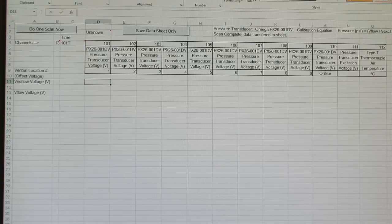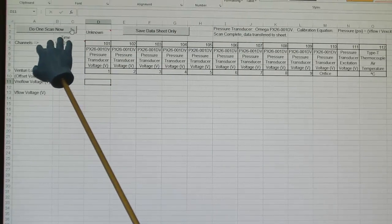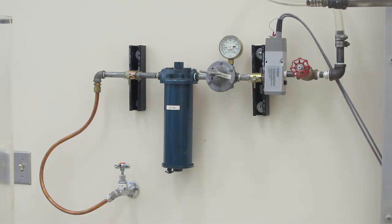The first thing we will do is take a measurement with our instrumentation with a zero flow condition. This is done by highlighting cell D11 and clicking on the Do One Scan Now button. Now we are ready to turn on the flow and collect data.